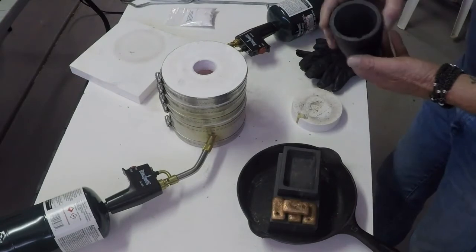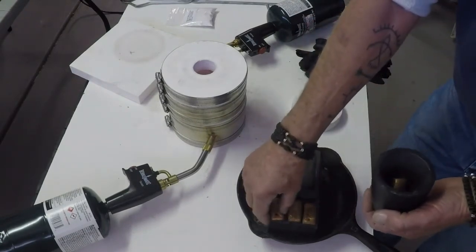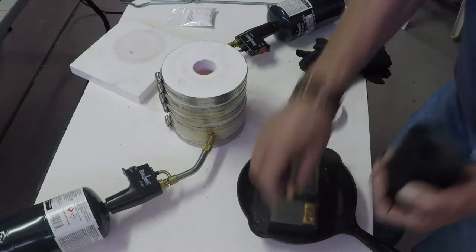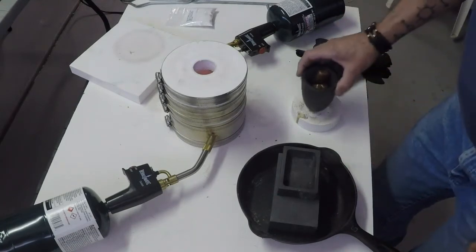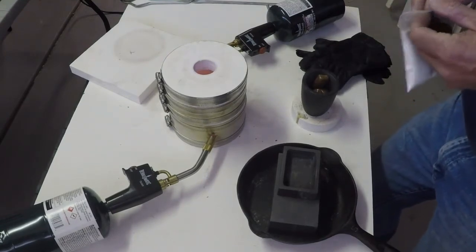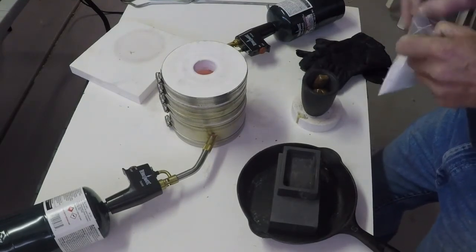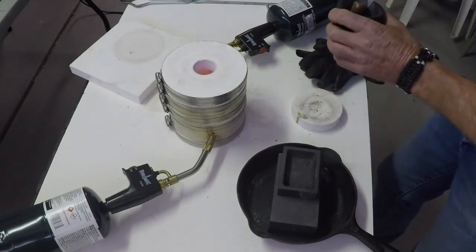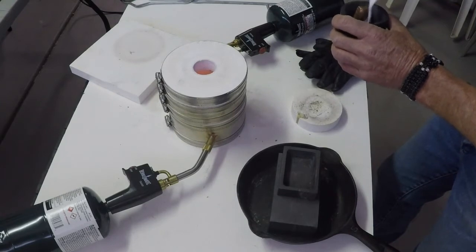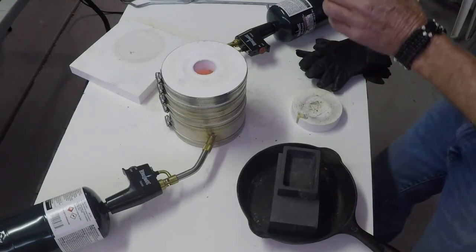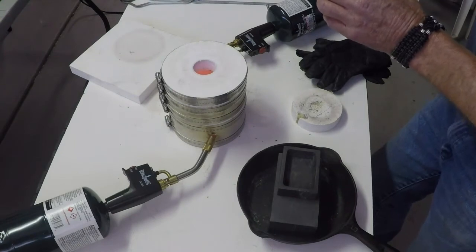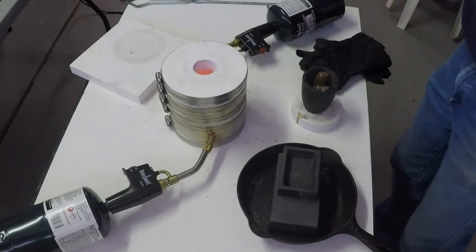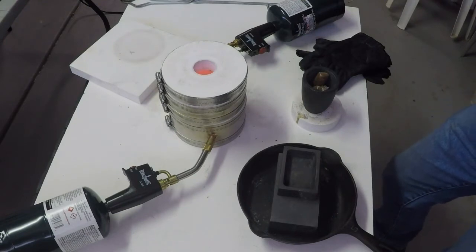Take my little clay graphite crucible here and we'll put these little three ounce bars in there. We'll dump four of them in there, 12 ounces or a troy pound. We'll set that there and put about an ounce and a half of white flux in it. Pretty close.